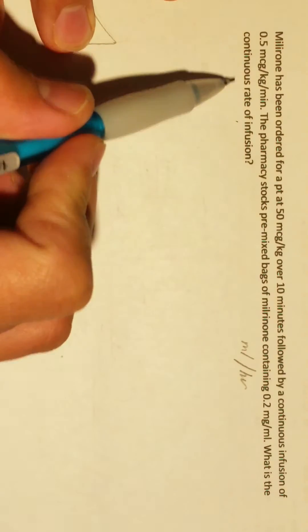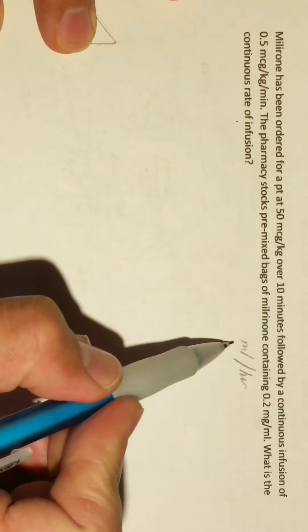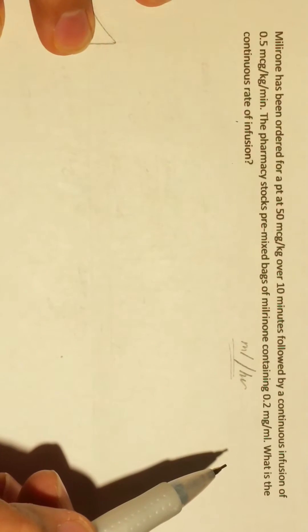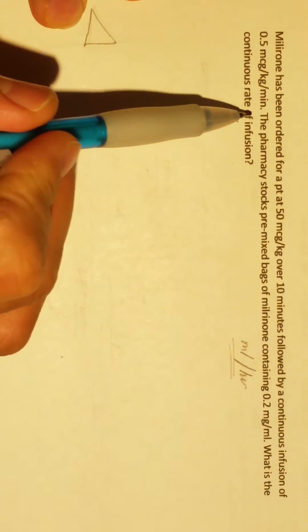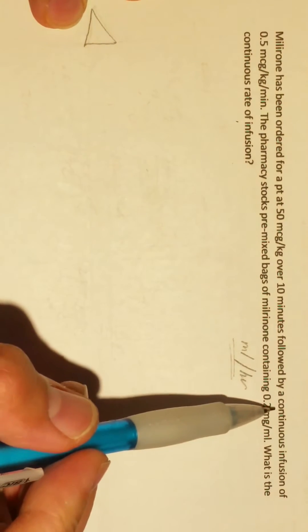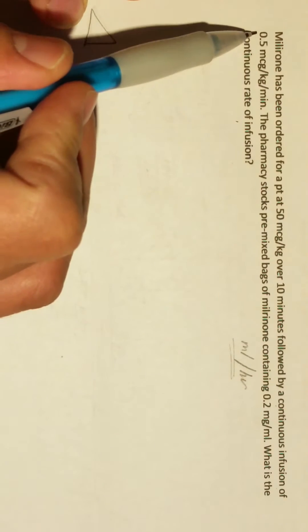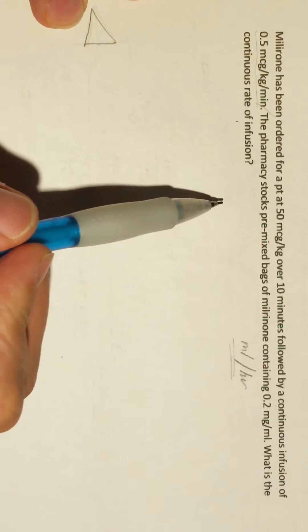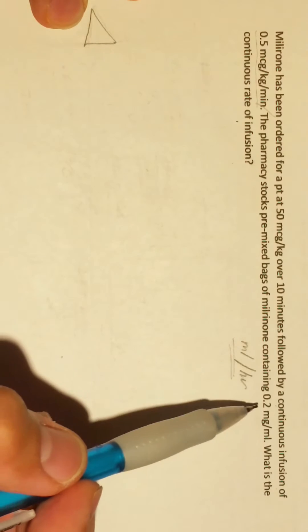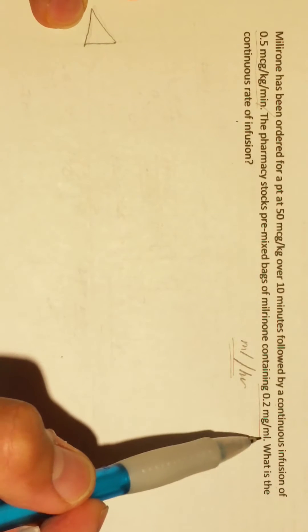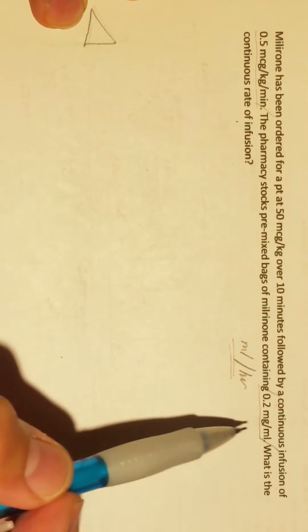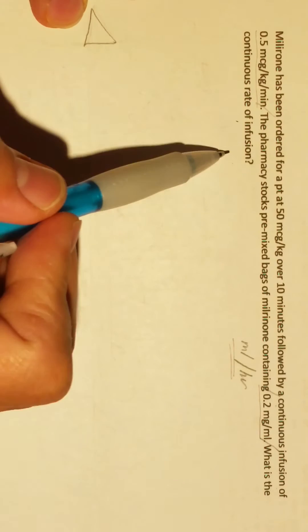The question is asking us: what is the continuous rate of infusion? This pertains to mL per hour. So we're going to focus on the continuous infusion of 0.5 mcg per kilogram per minute.